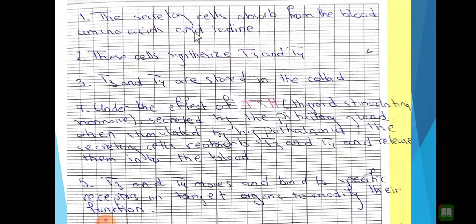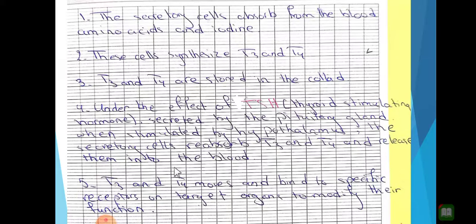The secretory cell absorbs amino acids and iodine from the blood. T3 and T4 are stored in the colloid. Under stimulation by TSH — secreted by the pituitary gland, itself stimulated by the hypothalamus — the secretory cells reabsorb T3 and T4 and release them into the blood. T3 and T4 then move and bind to specific receptors in the target organs to modify their function. That was all about the structure and functioning of the thyroid gland — hope you understand it, and if you have any questions, ask me privately.